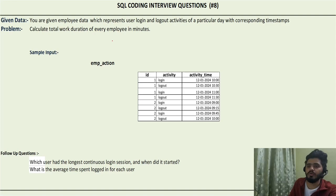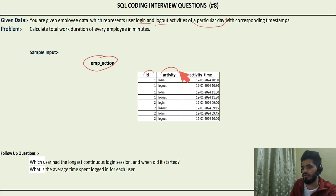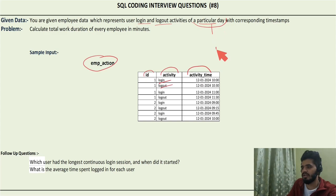The problem statement says: you are given employee data which represents user login and logout activities of a particular day with corresponding timestamps. This is the data called 'employee_action,' which contains employee ID, employee activity, and activity time. The activity can be login or logout for a particular employee, and the activity time is for a particular day — here that day is 12/01/24 — with timestamps like 10 PM, 10:30 AM, and so on.